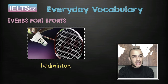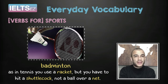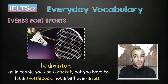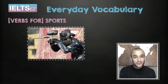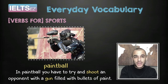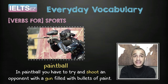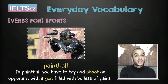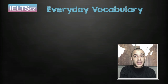And this is Badminton. As in tennis, you use a racket, but you have to hit a shuttlecock, not a ball, over a net. Racket. Shuttlecock. Net. Finally, have you done this activity before? It's paintball. In paintball, you have to try and shoot an opponent with a gun filled with bullets of paint. Shoot. Gun. Remember those words, as you will hear some of them again in this lesson.